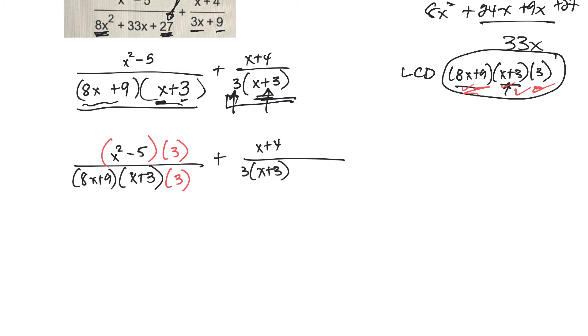But in the denominator, I have these two. I don't have this one. So I need to include an 8x plus 9 there. If I have it on the bottom, I have to include it on the top.